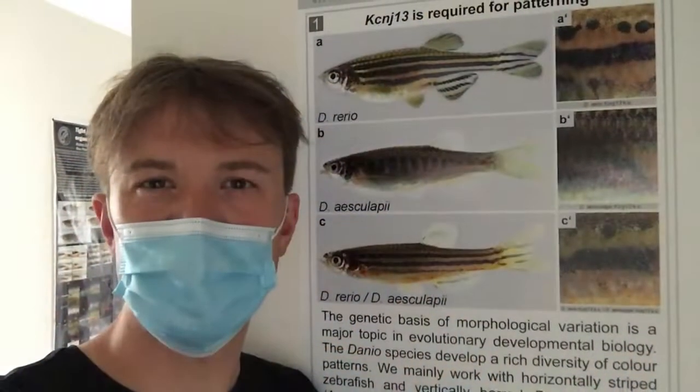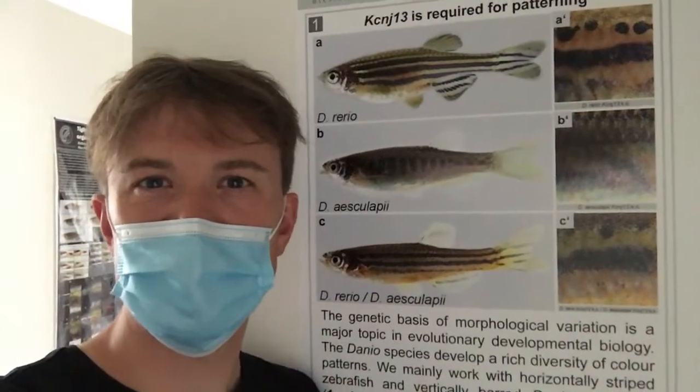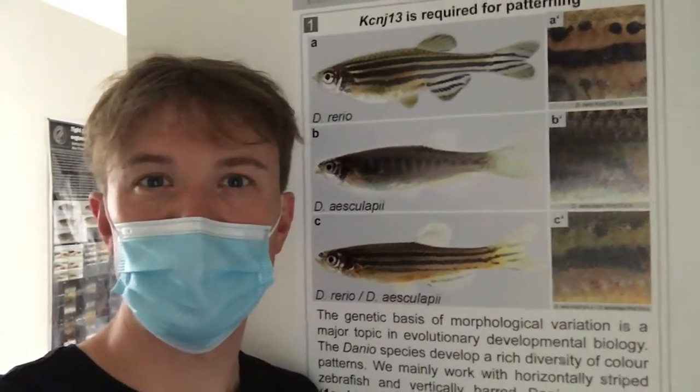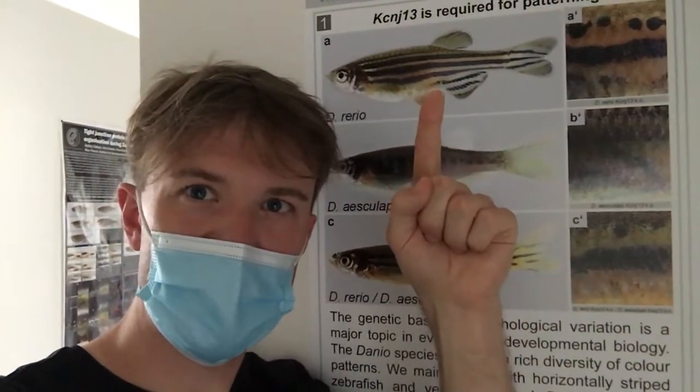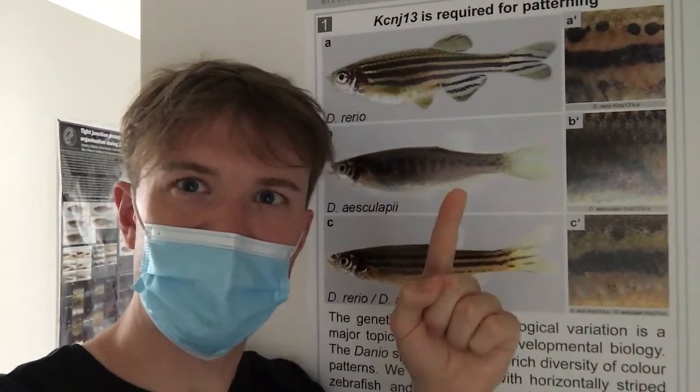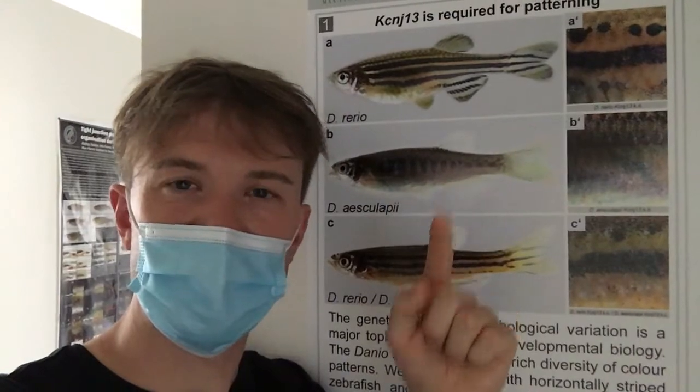Hopefully you can see the patterns of the different species here a little bit better. This is the zebrafish Danio rerio and this is Danio esculapii.